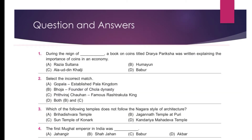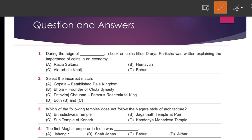Our question number one is: During the reign of blank, a book on coins titled Draya Pariksha was written explaining the importance of coins in an economy. The answer is Option number C, Alauddin Khilji.